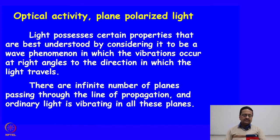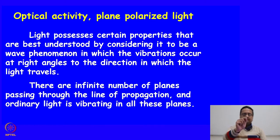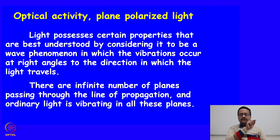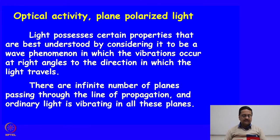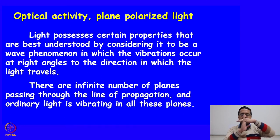Light possesses properties best understood by considering it to be a wave phenomenon in which the vibrations occur at right angles to the direction in which the light travels. If a light is travelling in this direction towards you, then the electric vectors are vibrating in the horizontal plane and the magnetic vectors are vibrating in the vertical plane, and there are infinite number of such planes in which they vibrate in a perpendicular direction.